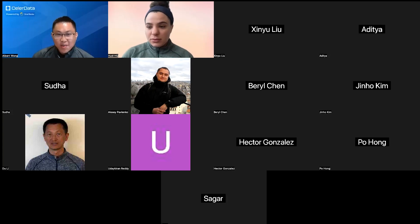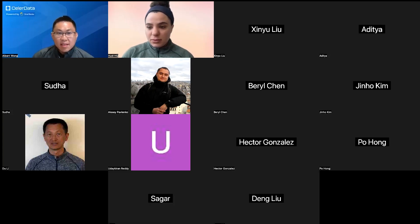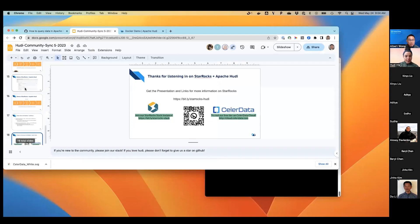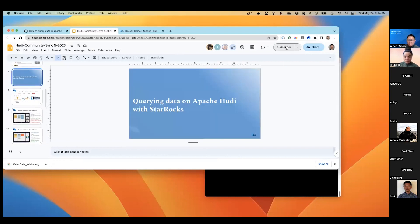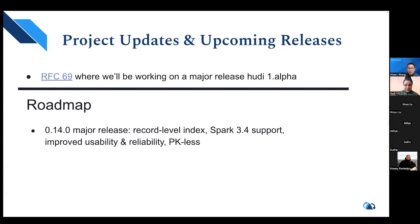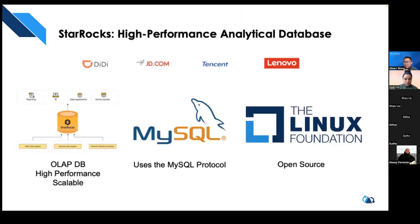Hi, my name is Albert Wong. I'm the developer advocate at CelerData. CelerData is actually the commercial provider for StarRocks. My background is as a Java developer. I've worked a long time at Red Hat and a long time at MongoDB, and now I'm at CelerData. CelerData means "quick" in Greek — that's how we picked the name, and what we pride ourselves on is being a high performance analytical database.